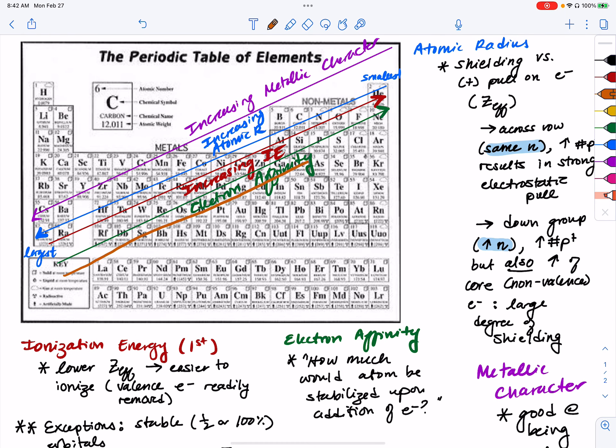And so the trend follows that if you've got a small atomic radius you also have a large electronegativity.